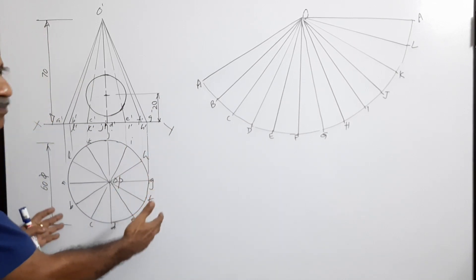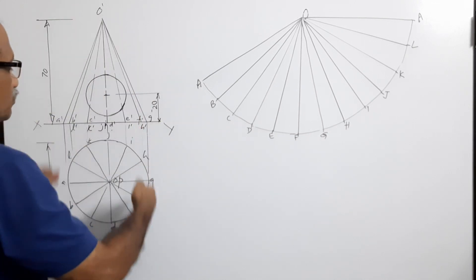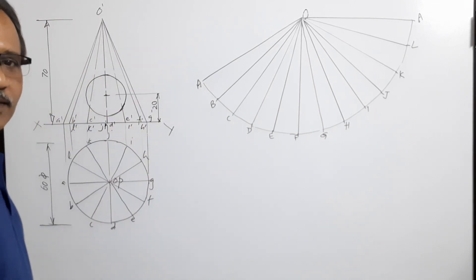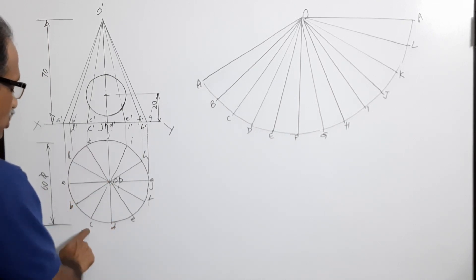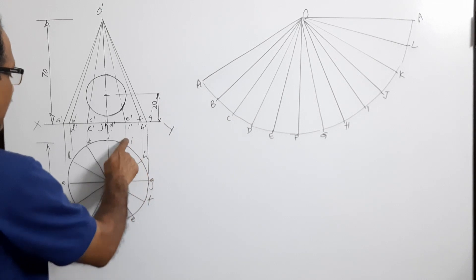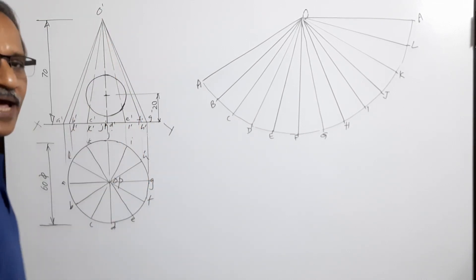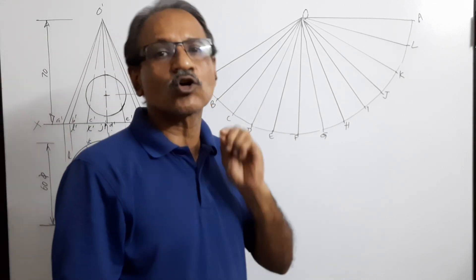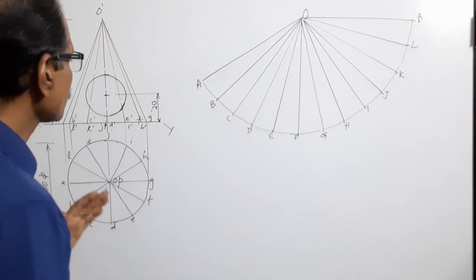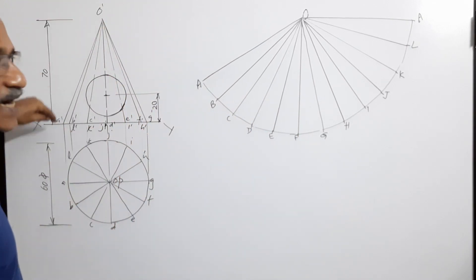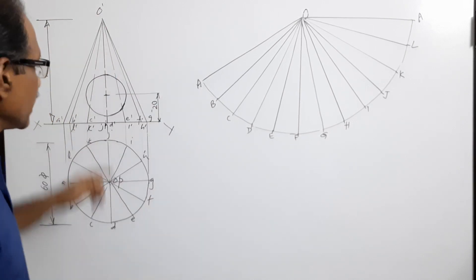This is a cone of diameter 60 mm and altitude 70 mm. I draw the plan, the circle, and elevation projecting them. Then I divide the circle into 12 equal parts and mark a, b, c, d, e, f, g, h, i, j, k, l, and project the elevation drawing all generators. I am assuming 12 generators on the cone. Generator o-dash a-dash and generator o-dash d-dash are true length because they are on the sides; no other generator in elevation is true length.